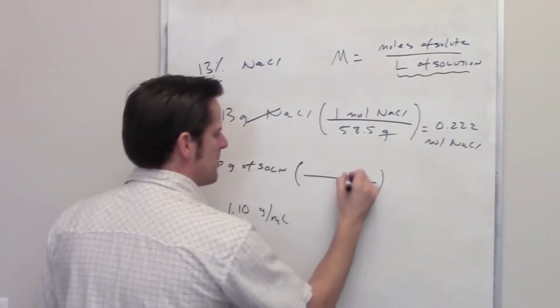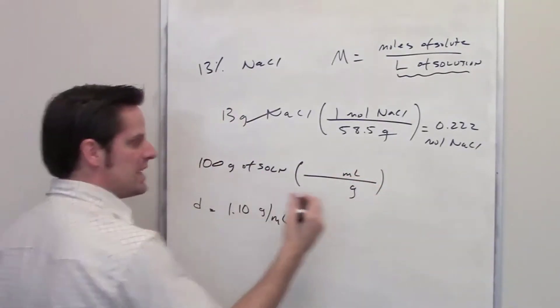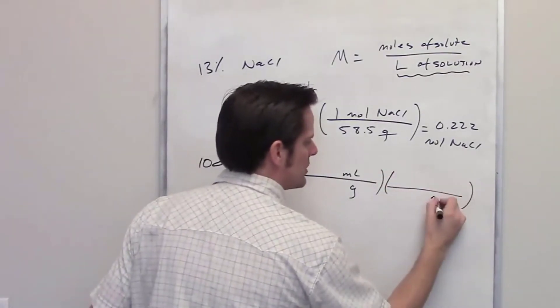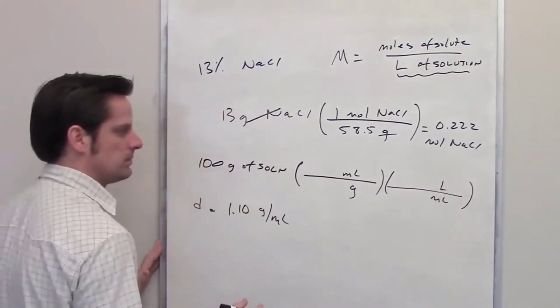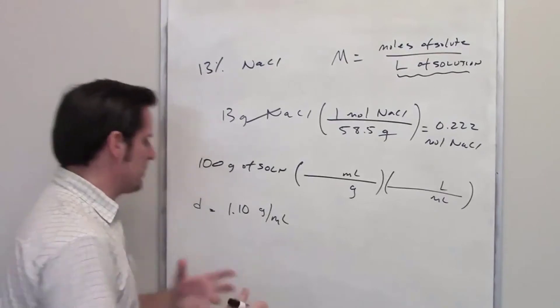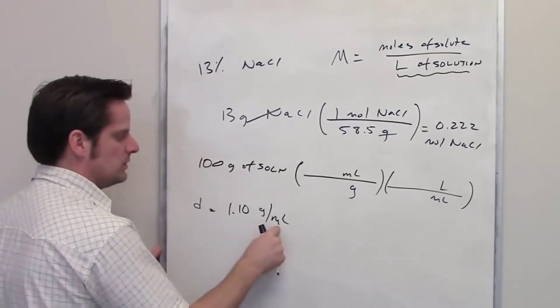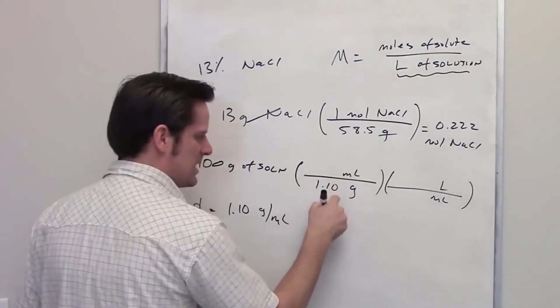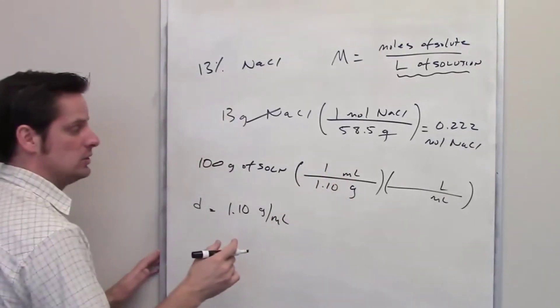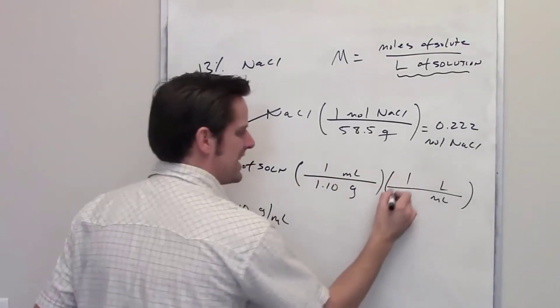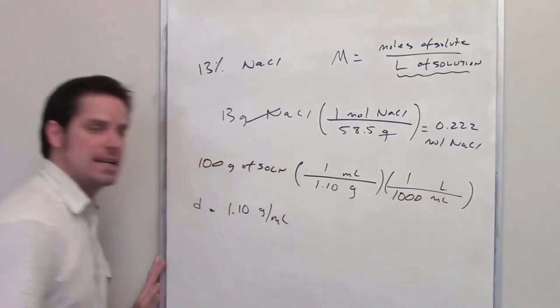Now I'm going to use the density to convert that into liters. So I've got grams in the basement, milliliters on top. I want liters, so I'm going to put milliliters down here in the basement and liters on top. According to what we've been told in the problem, 1.1 grams per milliliter is the density. So I put 1.1 grams in the denominator, 1 milliliter in the numerator.